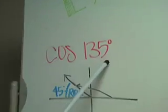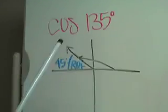The topic is exact values of sine and cosine. For cosine of 135 degrees, we look at the unit circle and find that cosine in quadrant 2 is negative.